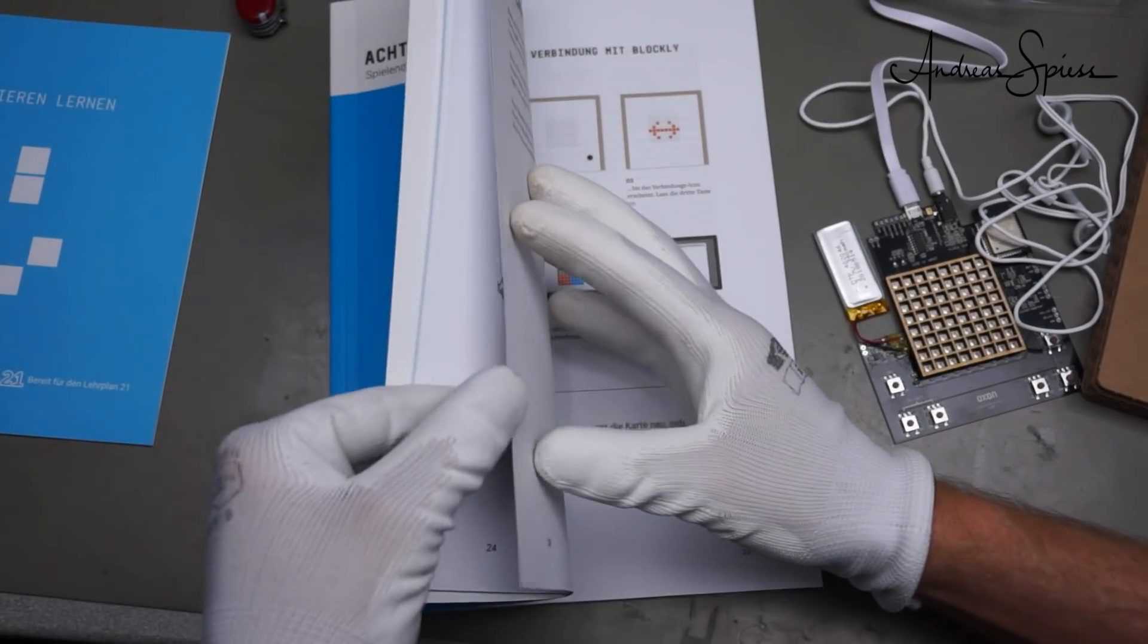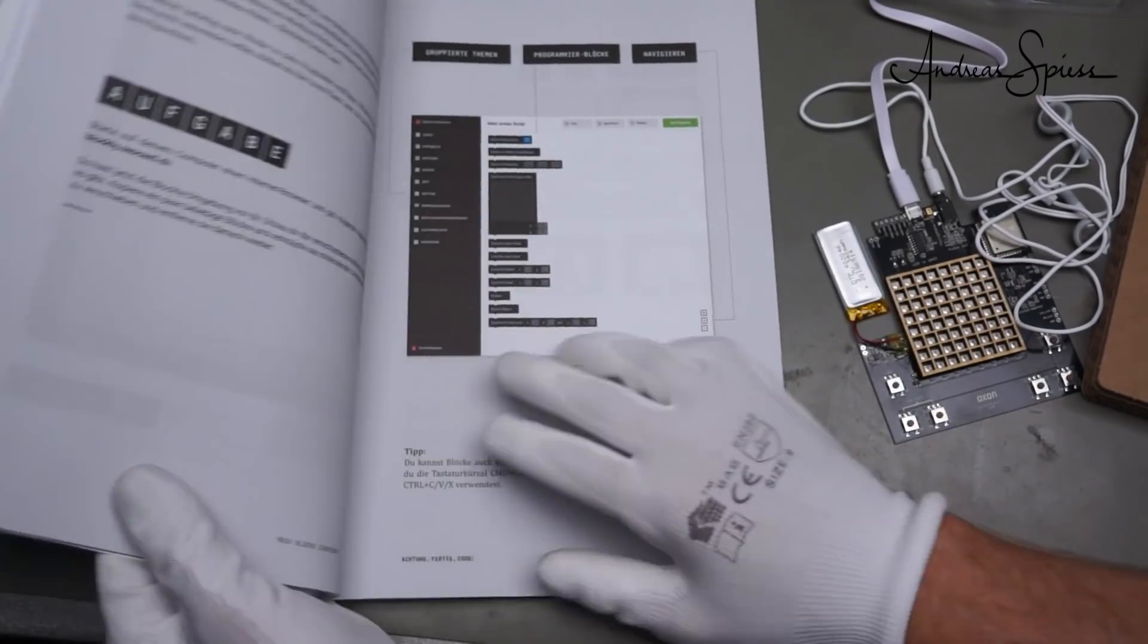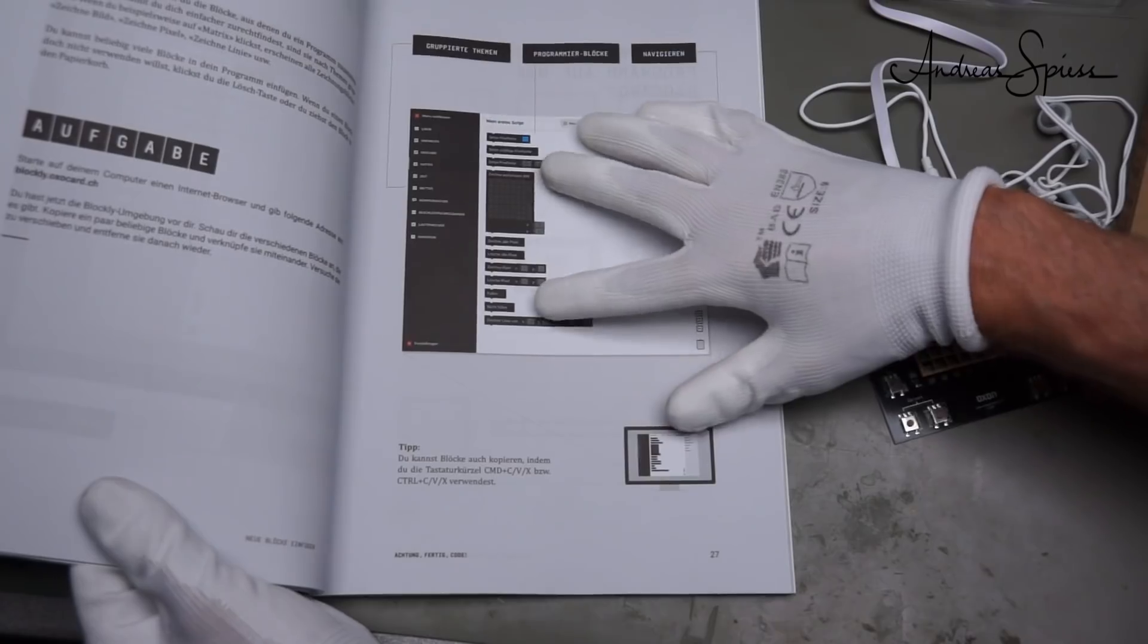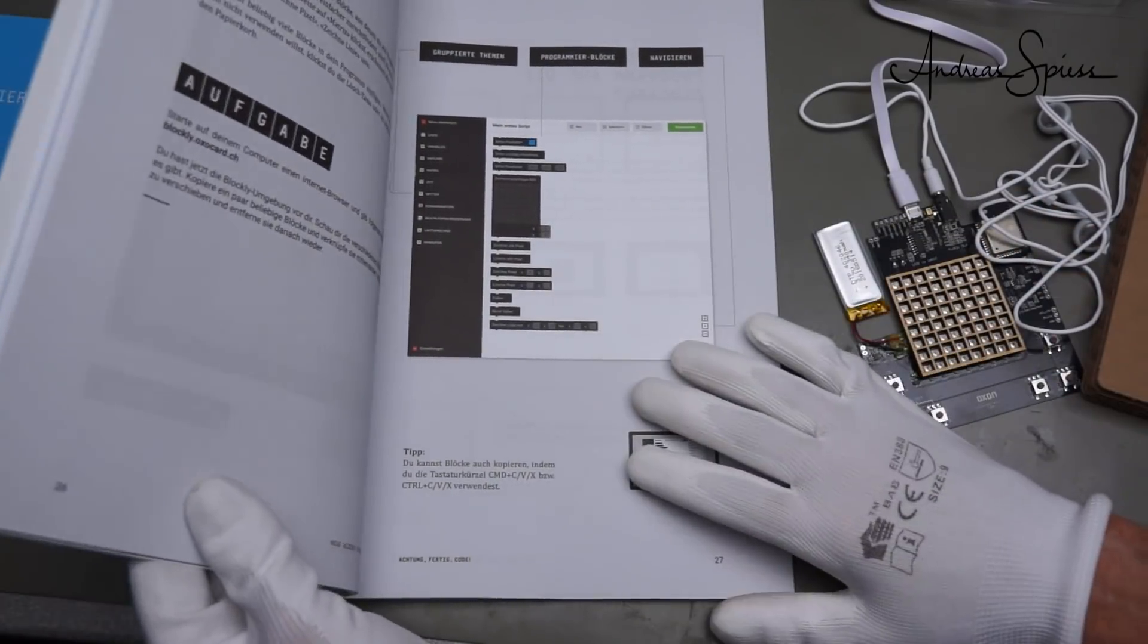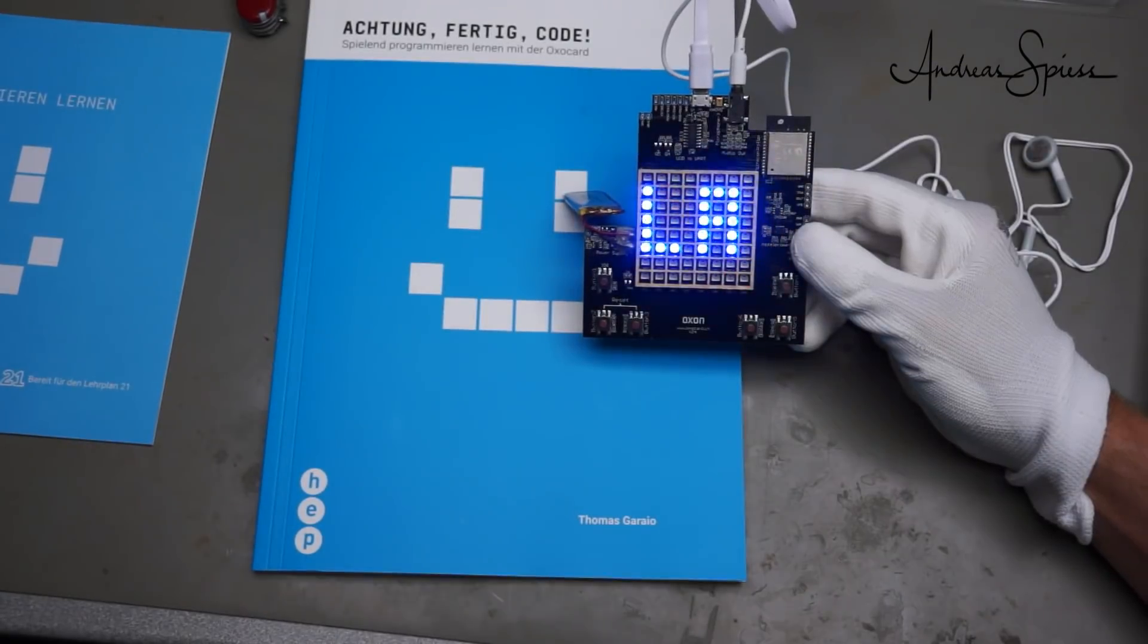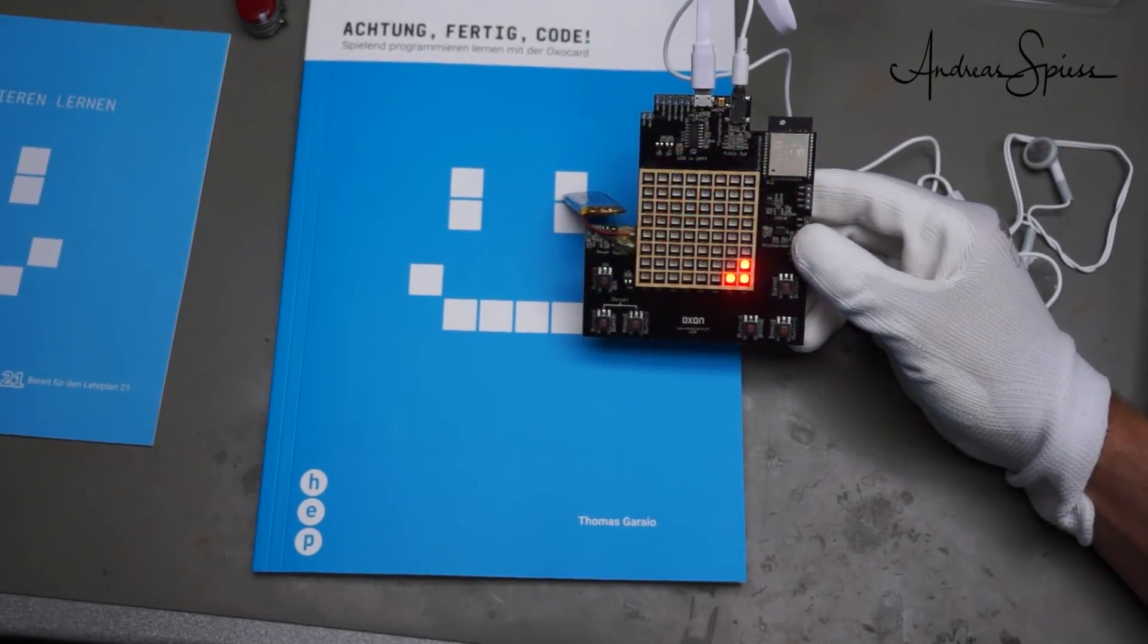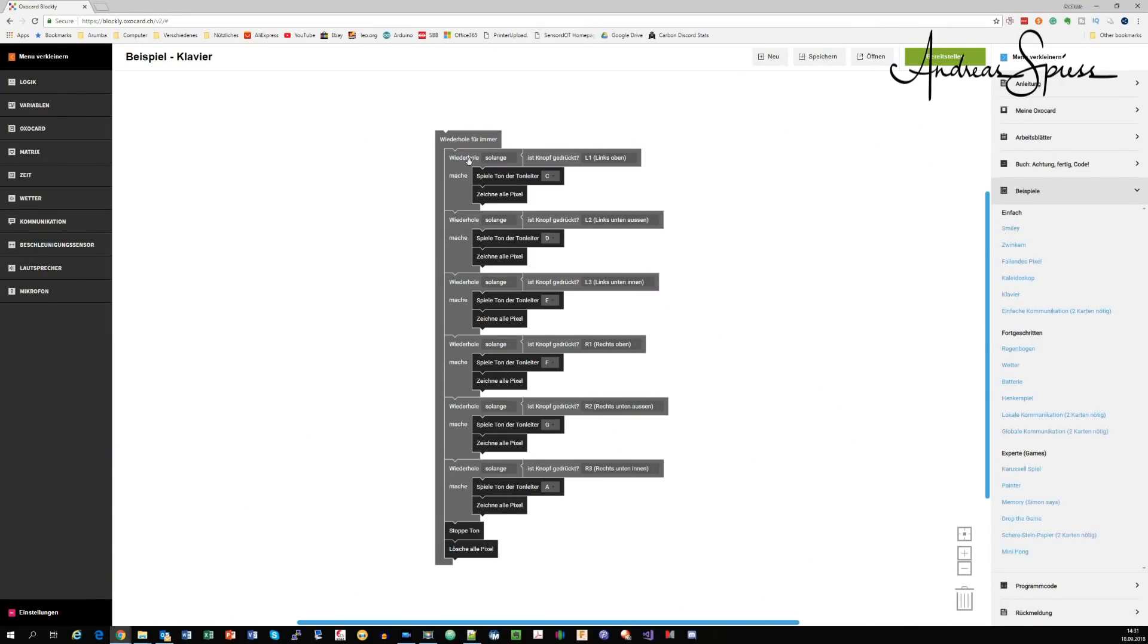They have a nice description here with all the different things. And they do not use the Arduino IDE. They use a programming language called Blocky, which seems to be online. I have to check it afterwards. Here we have a small program. It is a piano. This means piano. And it has one, two, three, four, five, six different tones. And depends on which button is pressed. So left top, left button outside, left button outside. Inside and so on.